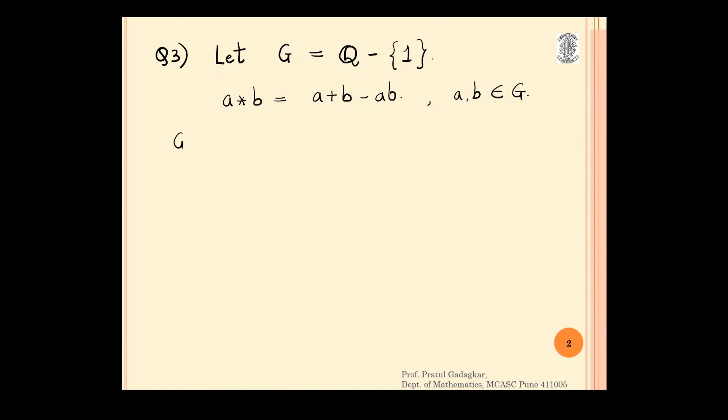Now this G with this particular operation forms a group. What we want to do in this exercise is that we want to tell what is the identity of this group. Second, if alpha is some element in G we want to find its inverse. So let us solve this exercise now.